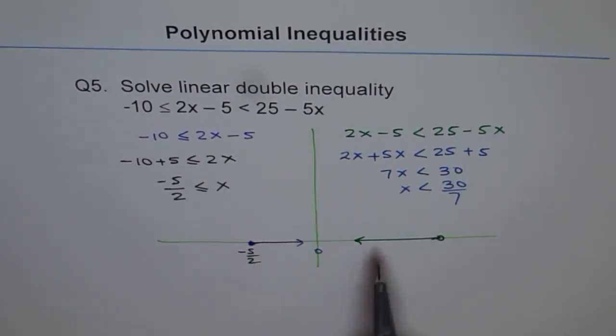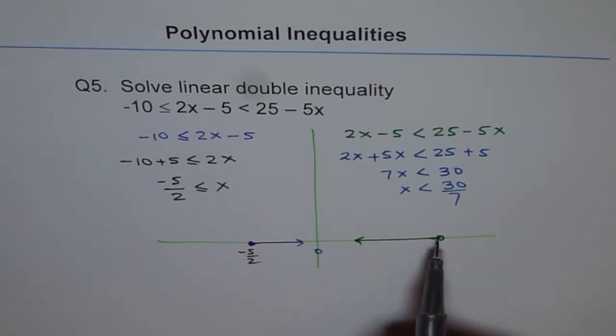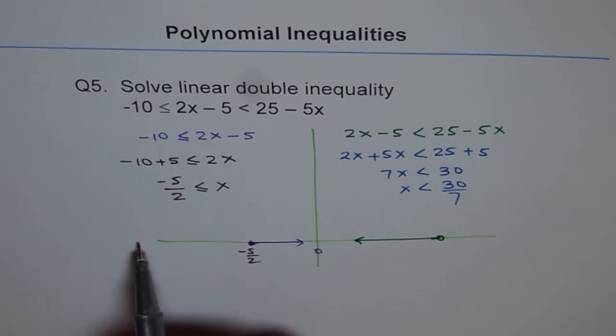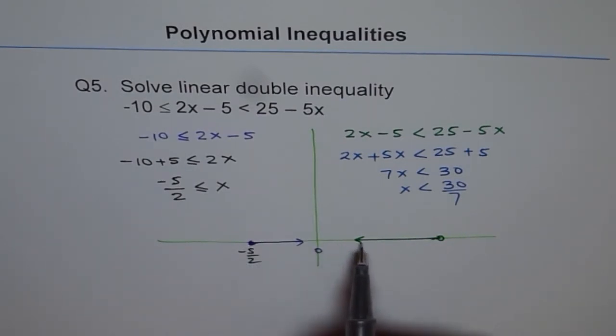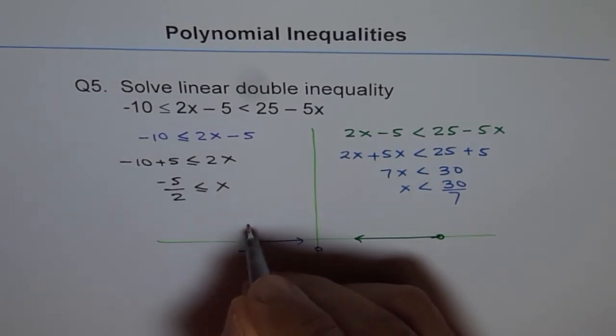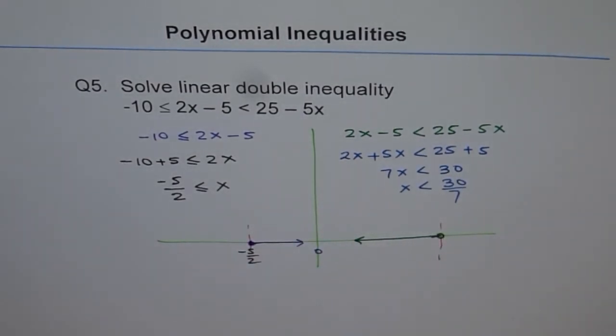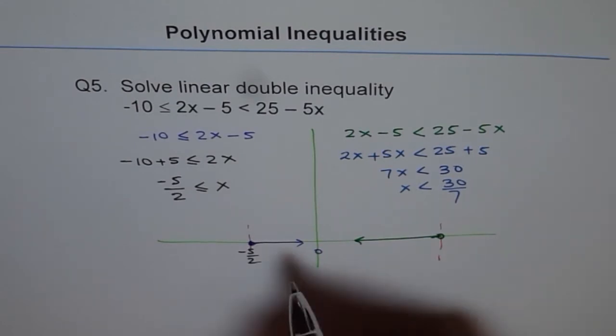Now, so these are two separate solutions. We have to look for the common points. So this is all the way till minus infinity and this is all the way till plus infinity. The common portion is between the two. This is our solution.